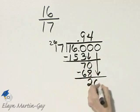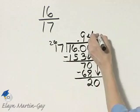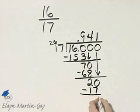Bring down the next 0. How many times does 17 divide into 20? That would be 1 time. 1 times 17 is 17. Subtract. And we have a remainder of 3.